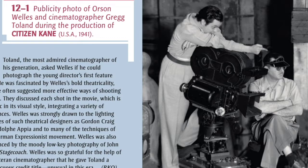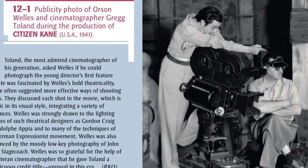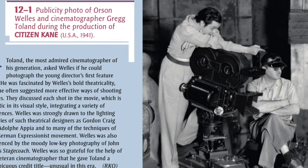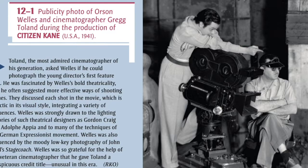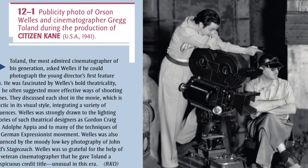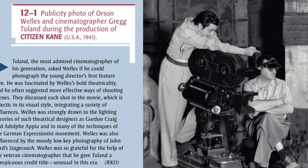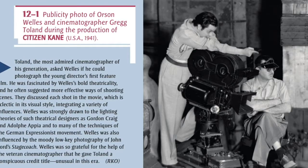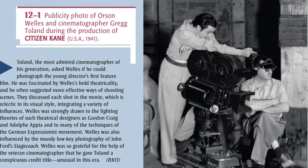12-1: Publicity photo of Orson Welles and cinematographer Greg Toland during the production of Citizen Kane, U.S.A., 1941. Toland, the most admired cinematographer of his generation, asked Welles if he could photograph the young director's first feature film. He was fascinated by Welles' bold theatricality and he often suggested more effective ways of shooting scenes. They discussed each shot in the movie, which is eclectic in its visual style, integrating a variety of influences.